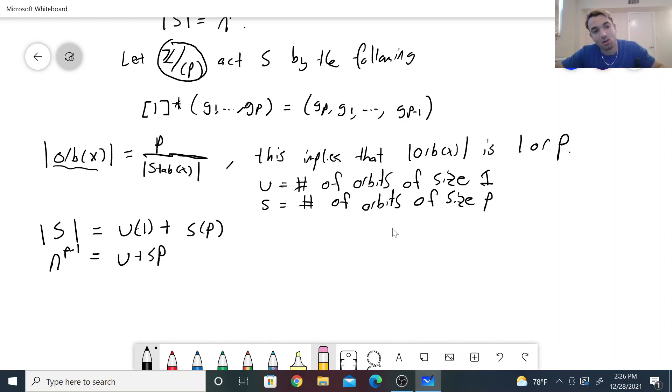But p divides the left-hand side since, by assumption, p divided the order of the group, and so p must divide this right-hand side. Well, p divides this right sum n since p is here. So this implies that p must divide u.